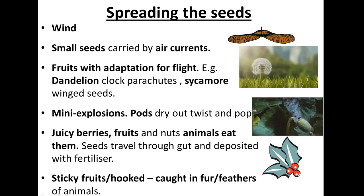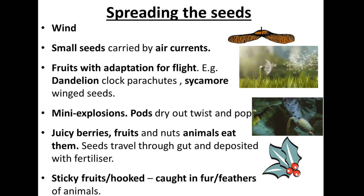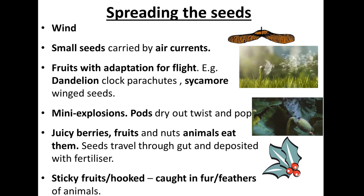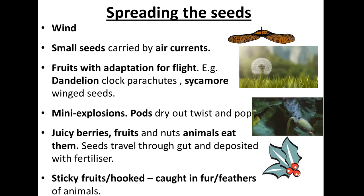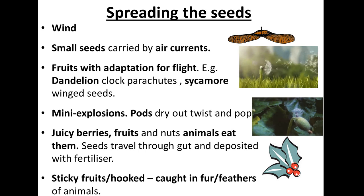There are also mini explosions — an example would be poppy seeds, where the pod dries out, then twists and pops, releasing all its seeds. Some berries and fruits attract animals to eat them. The animal eats them, travels further, and then as it excretes the seeds through its feces, this acts as a fertilizer, so the animal carries the seed further away.